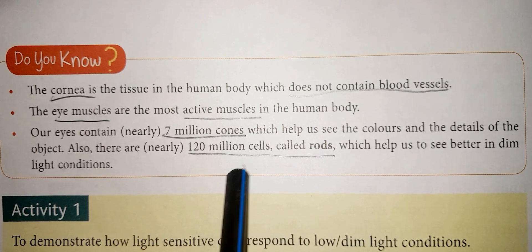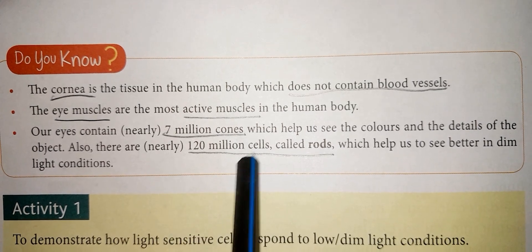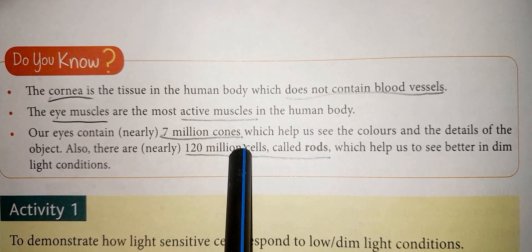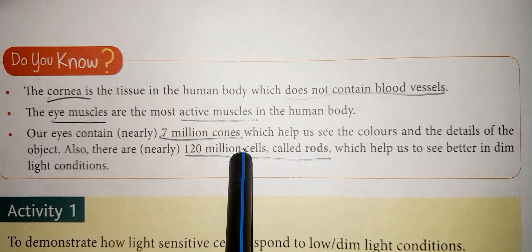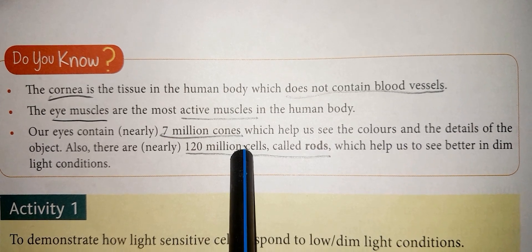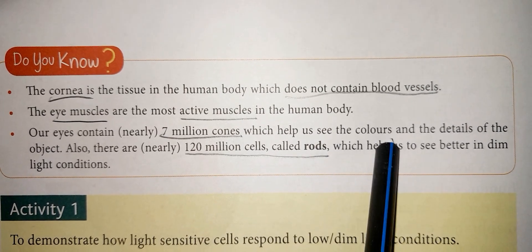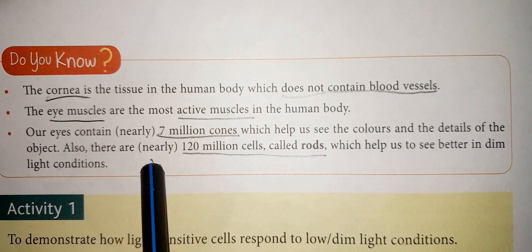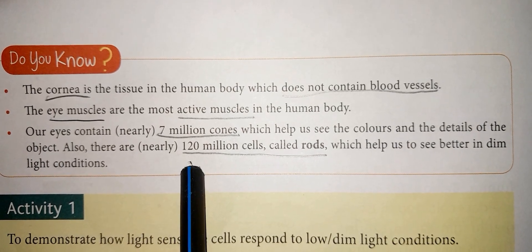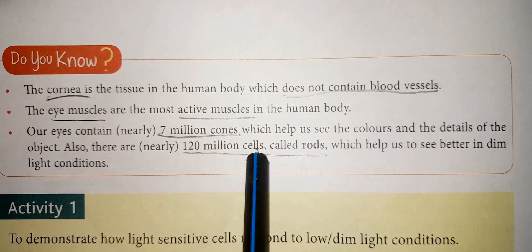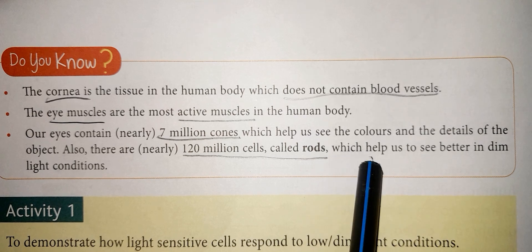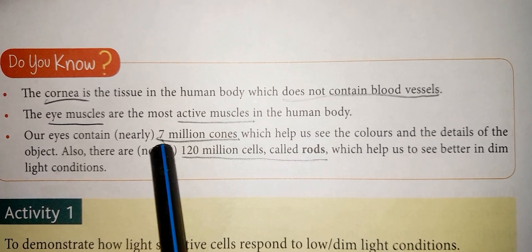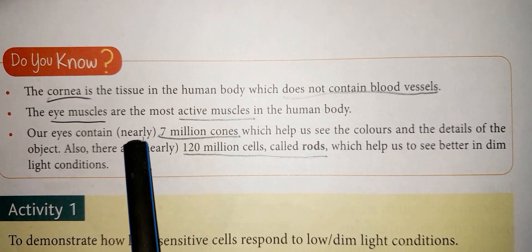This is very important, so students please remember: our eyes contain 7 million cones which help us see the colors and the detail of objects. Also, there are nearly 120 million cells called rods which help us see better in dim light conditions.